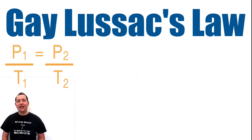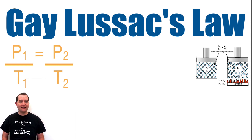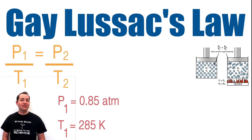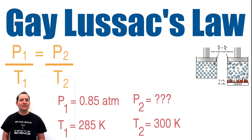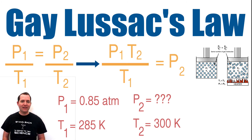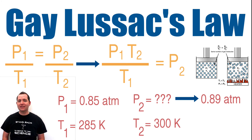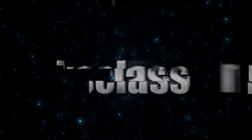The equation for Gay-Lussac's law is used to compare before and after scenarios of a gas. A gas in a container at a temperature of 285 Kelvin exerts a pressure of 0.85 atmospheres. If that gas is heated up to 300 Kelvin, what will its new pressure be? If we solve the Gay-Lussac's equation algebraically so that P2 is by itself and then substitute in each of our values, we can show that the new pressure will be 0.89 atmospheres.